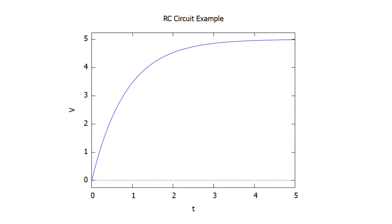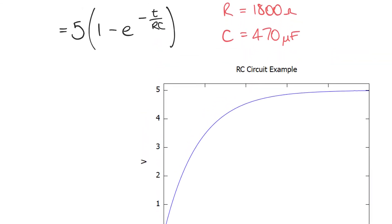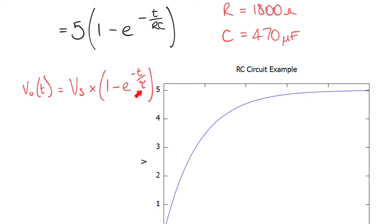This is the response for a step input; other input types will produce different results. The advantage of having derived the transfer function is that we can easily determine responses for different input types using the same method. Additionally, if you've seen the standard capacitor growth equation — VO equals supply voltage times 1 minus e to the power minus t over tau — comparing the two confirms that tau equals RC, a good derivation of why the time constant for a series RC circuit equals R times C.